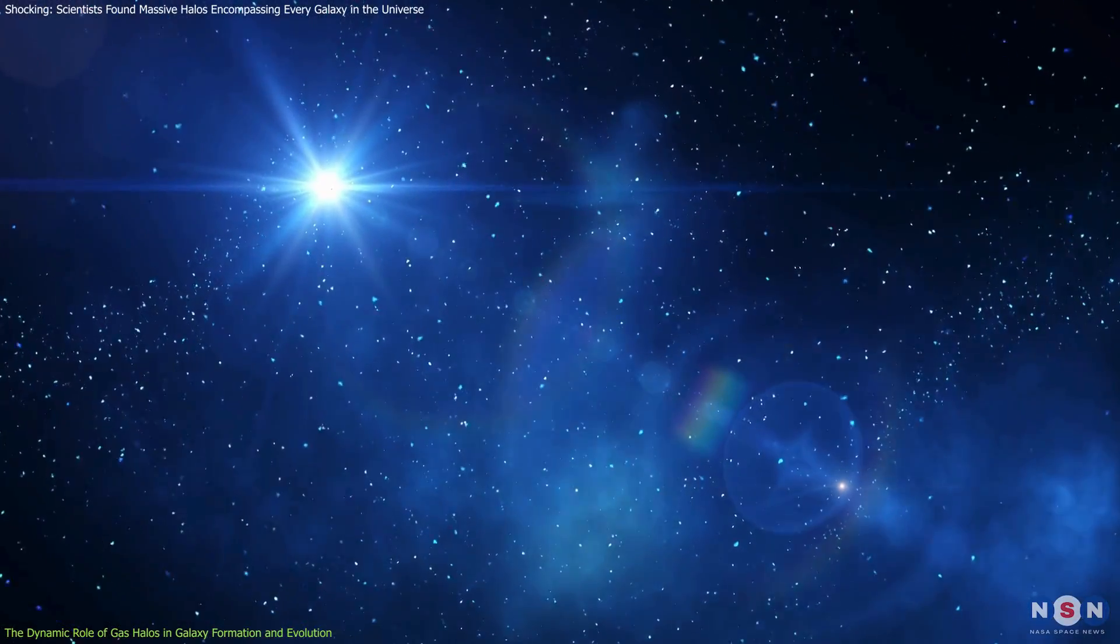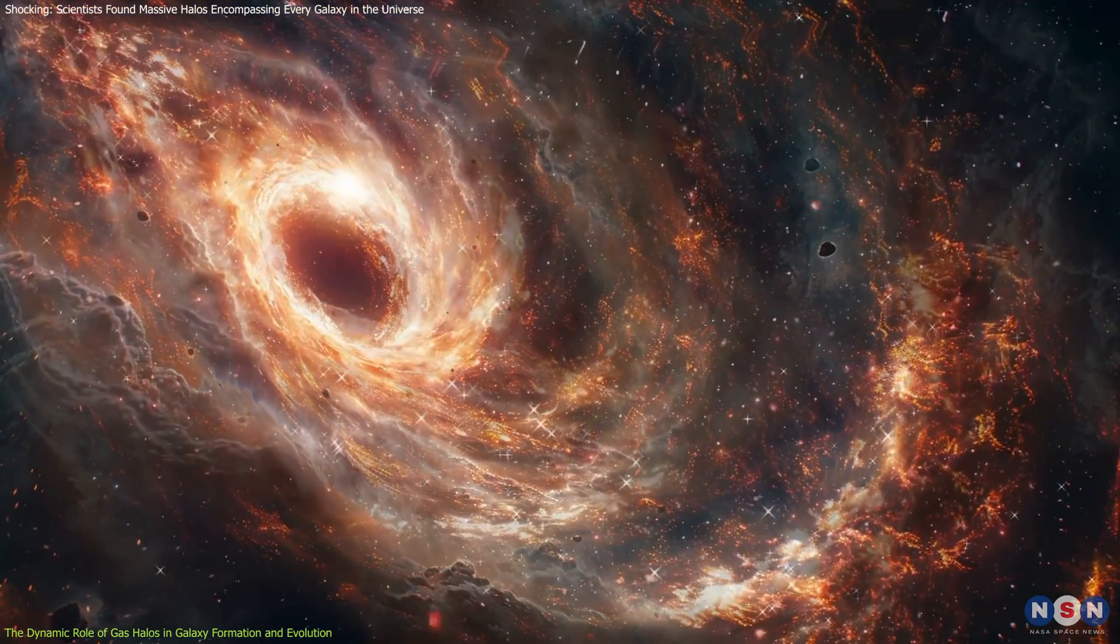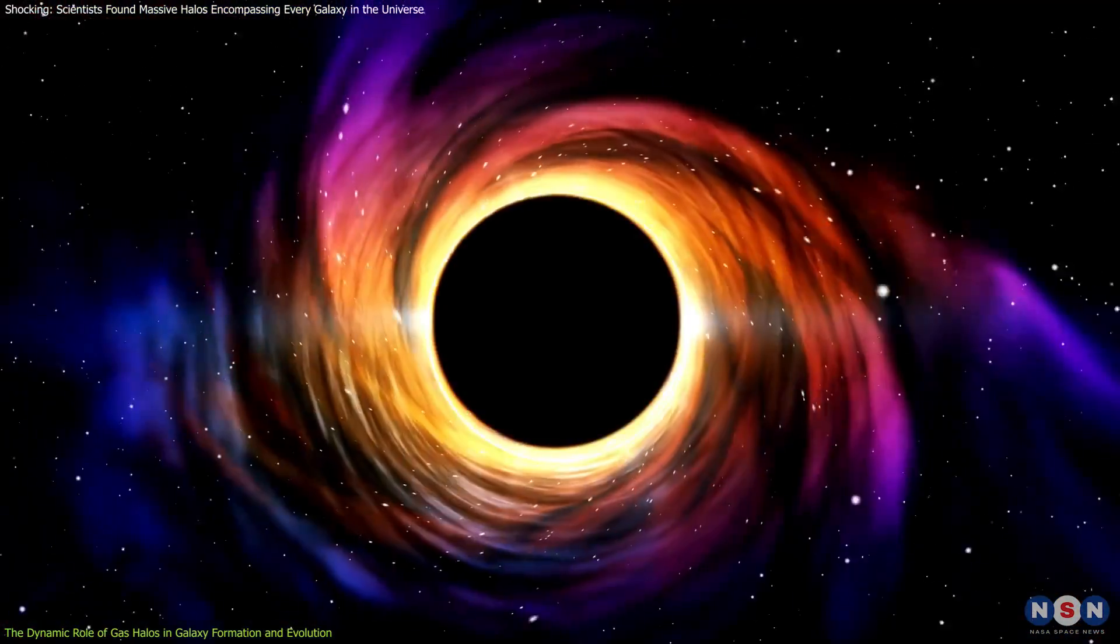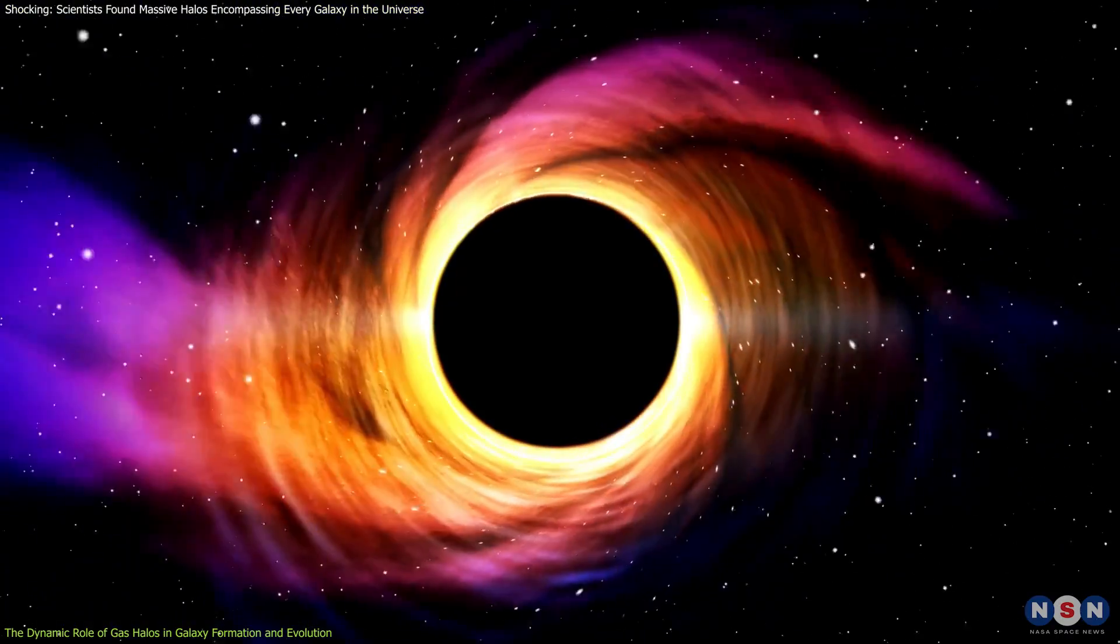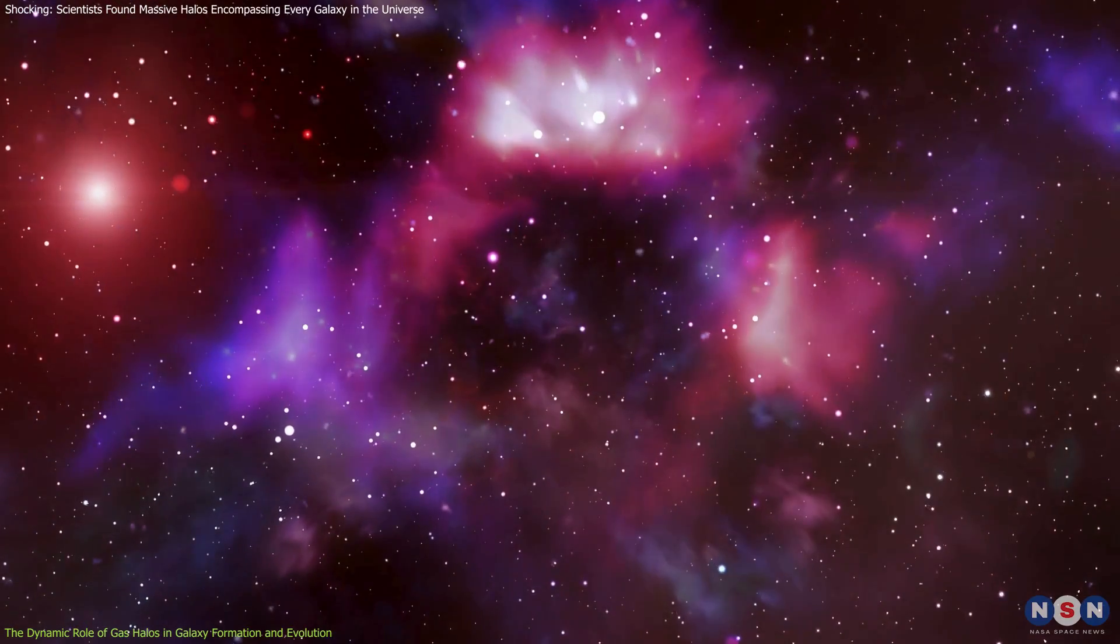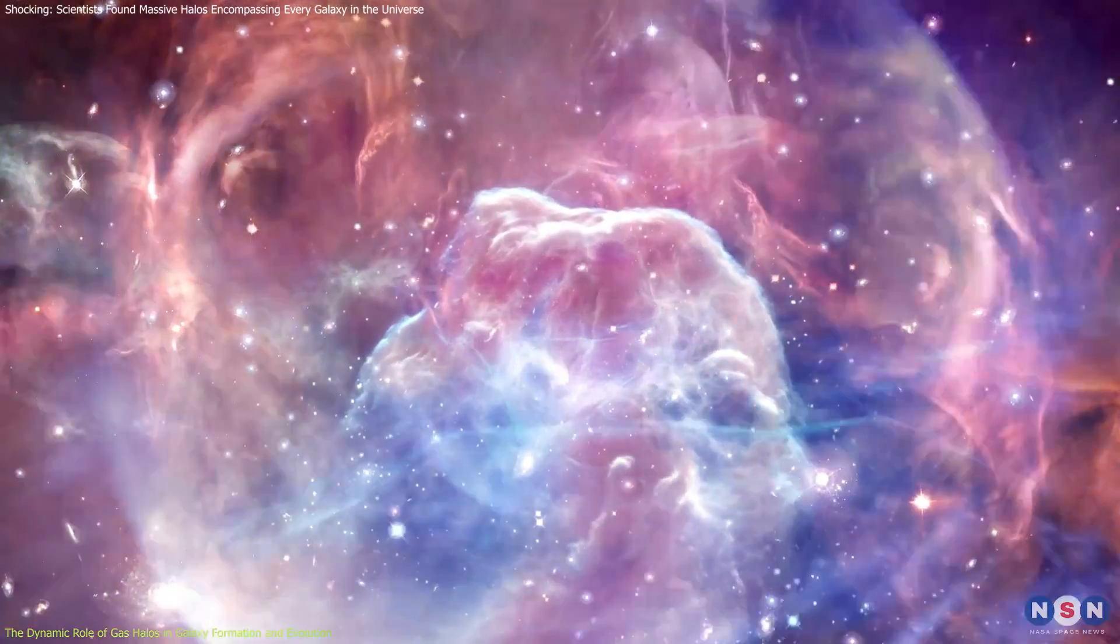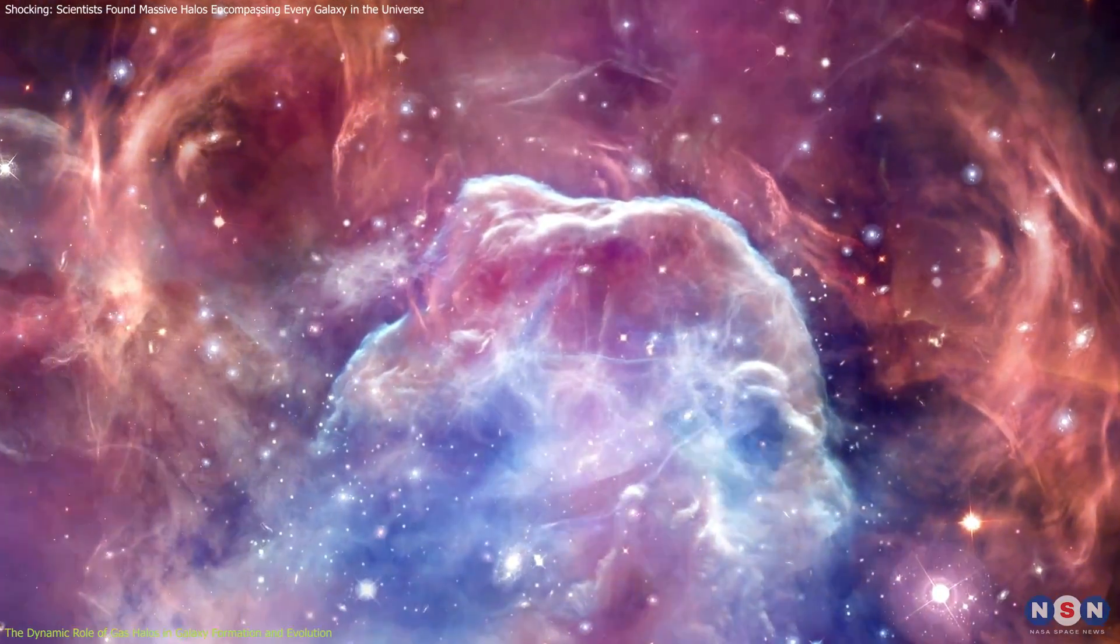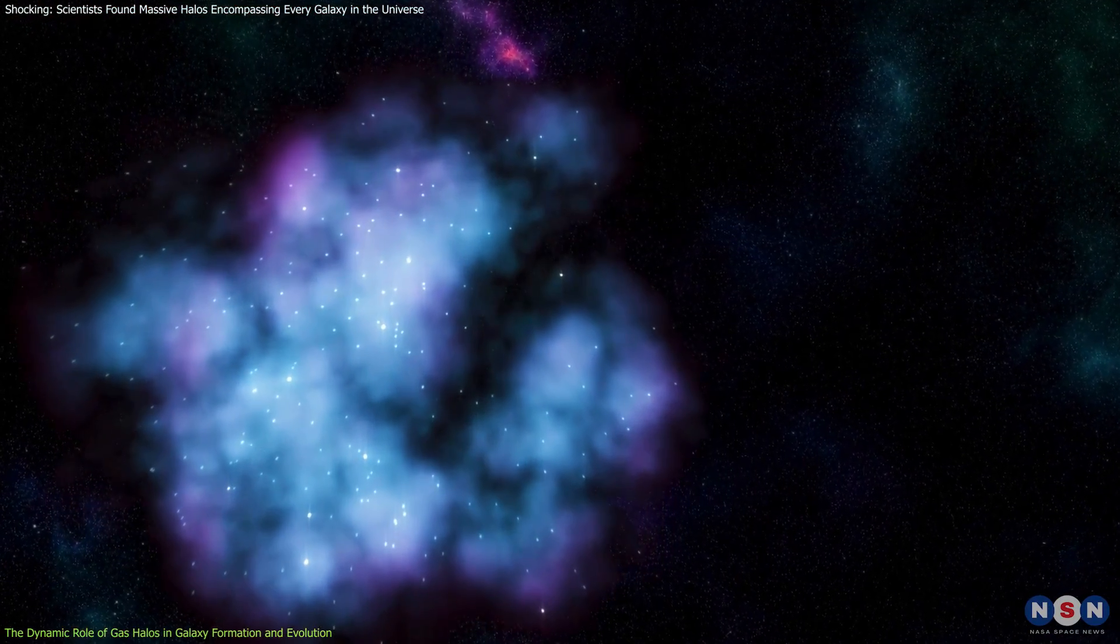Another possibility involves ultraviolet light from massive stars or black holes within galaxies. Some of this UV light can escape into the circumgalactic medium, CGM, and create an ambient cosmic background that interacts with the gas in the halos. When combined with fast-moving gas streams, this UV background might be enough to produce the faint glow observed in the halos.